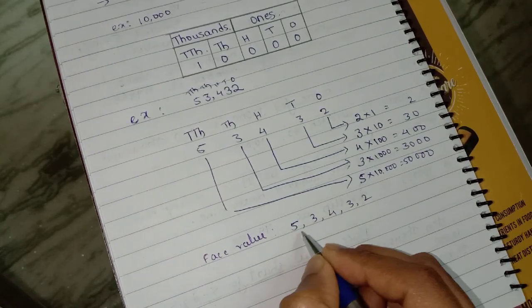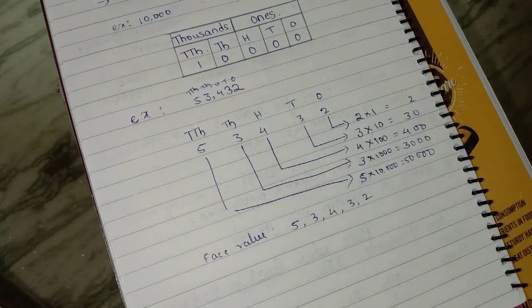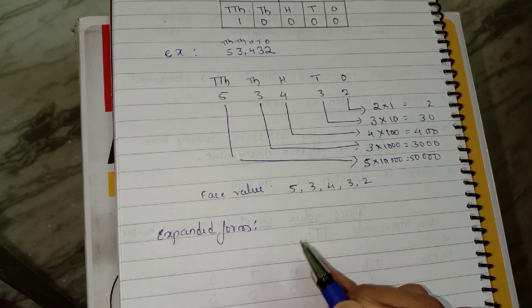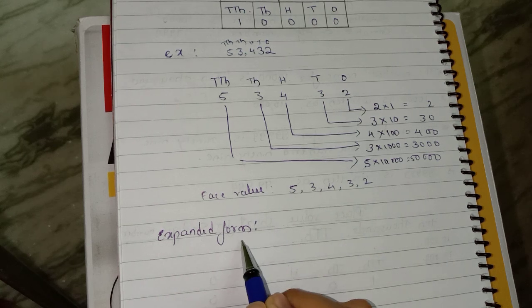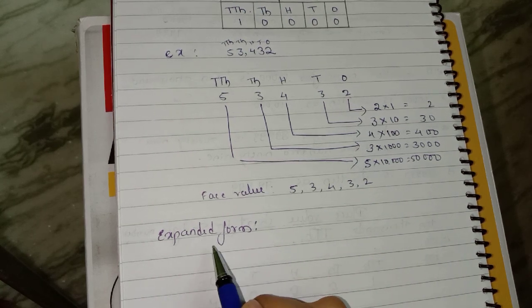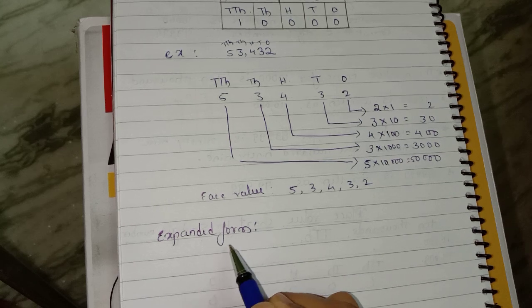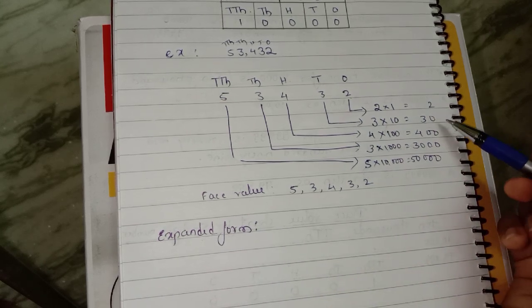Next, face value. We know that face value means the digit itself. So here the face values are: 5, 3, 4, 3, 2 — these are the face values of each digit in the number. In this video we are also going to learn expanded form.